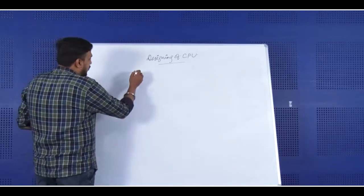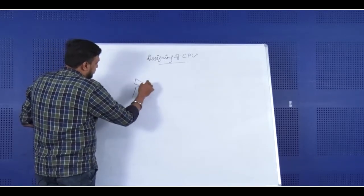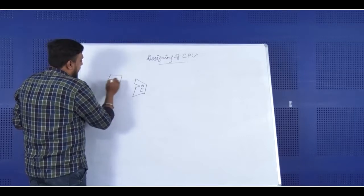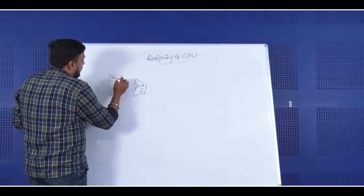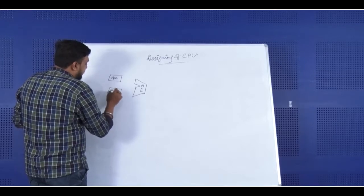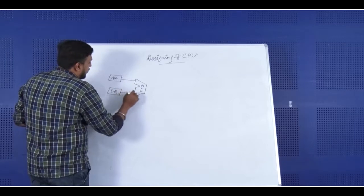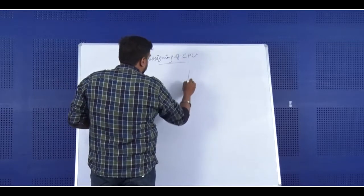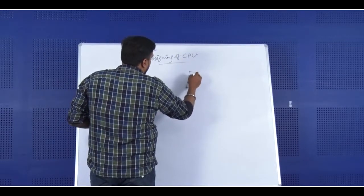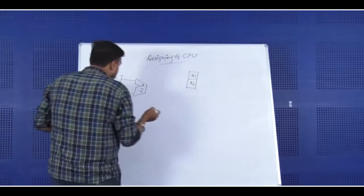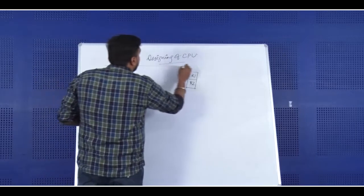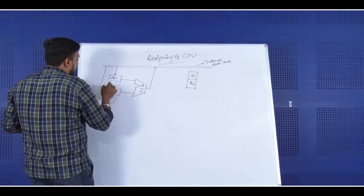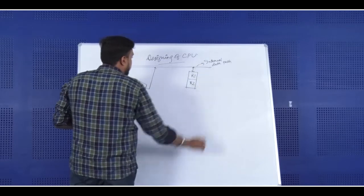Let us draw the ALU first. This is the ALU. Here, we have a special purpose register — the accumulator — and here, a temporary register, the data register or DR. Both of them are connected with the ALU. Here we are having some general purpose registers — let us make it R1 and R2. We are having one internal data path, and ALU will give the feedback here. The accumulator, the data register, and the general purpose registers are all connected with it.